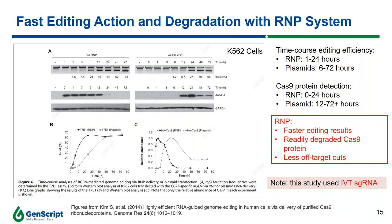In summary, the advantages of using the RNP system are faster editing results, readily degraded Cas9 protein, and fewer off-target cuts. It's important to note that this study was published in 2014, when the technology to chemically synthesize a long single-guide RNA (sgRNA) was not yet available. Therefore, the sgRNA used in this study was produced through in vitro transcription (IVT) using T7 RNA polymerase — what we call IVT sgRNA.